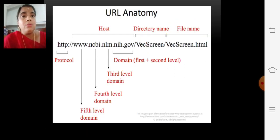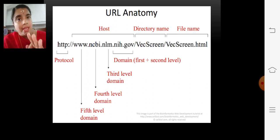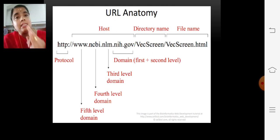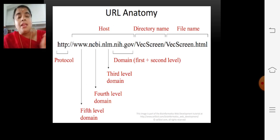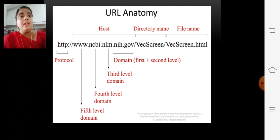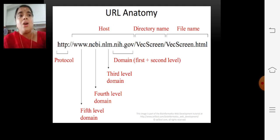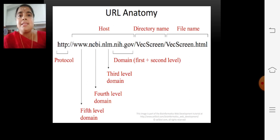What is the anatomy of a URL? It has a protocol, a host, a domain name, a top-level domain, a directory, a file name, and a file extension. Here, HTTP is the protocol, www is the host name, ncbi is the domain name, .gov is the top-level domain, the directory name follows, then the file name and .html is the extension.